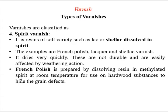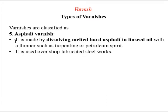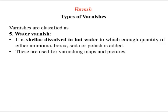The fourth type is spirit varnish, obtained when silica or lac is mixed in spirit. A common example is French polish, obtained by mixing resin in methylated spirit at room temperature. The fifth type is asphalt varnish, obtained by dissolving melted hard asphalt in linseed oil. A sixth type is water varnish, obtained by mixing shellac in hot water, mainly used for varnishing maps and pictures.